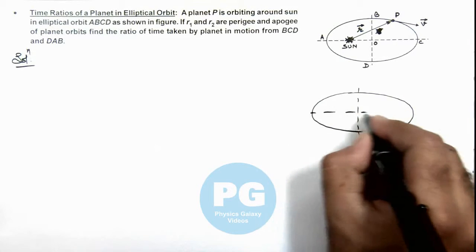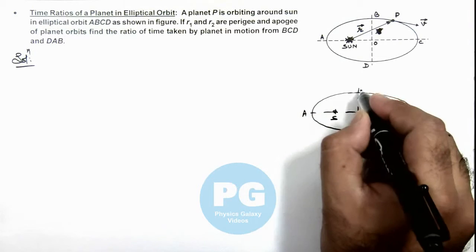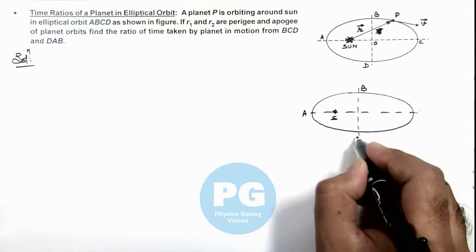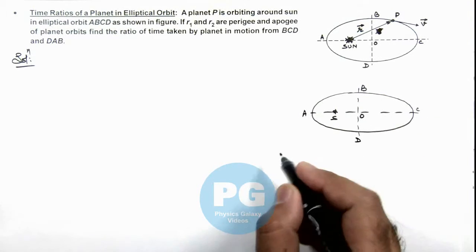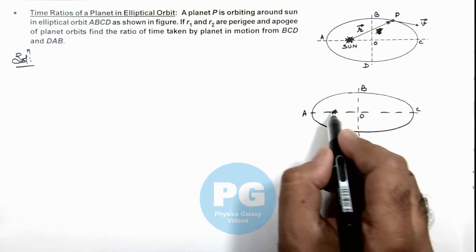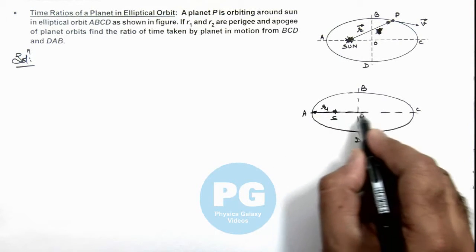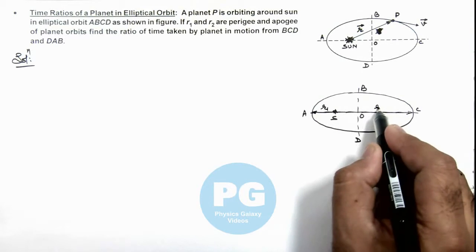Here you can see if this is the sun, and these are the points A, B, C, and D, and this is the center of ellipse. We are given that this distance is r1, the distance of perigee, and this distance of apogee is r2.